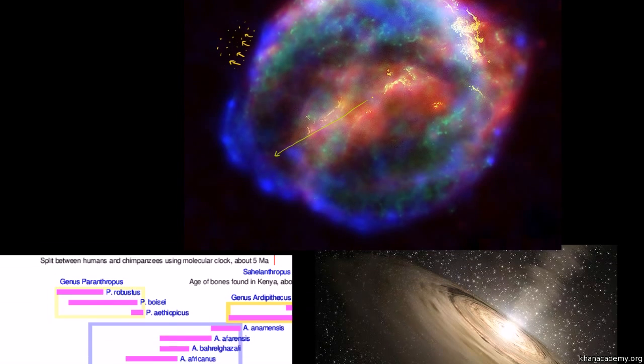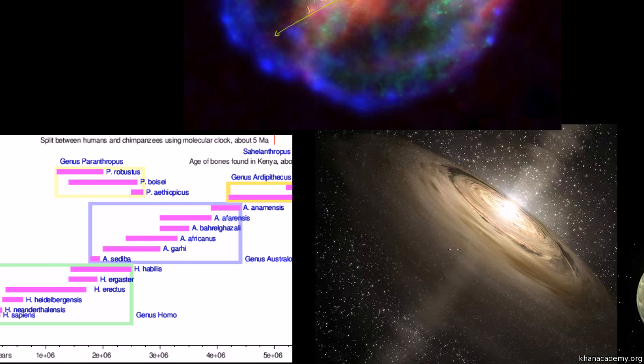You fast forward a few million years, that gas would have accreted into something like this. It would have reached the critical temperature, critical density and pressure at the center for ignition to occur, for fusion to start to happen, for hydrogen to start fusing into helium. This right here is our early sun.